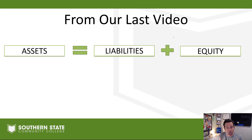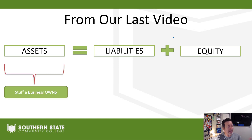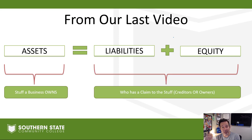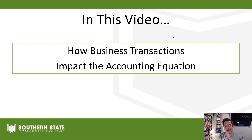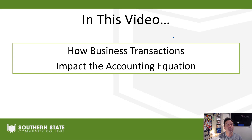To put that into non-accounting terms: assets are simply stuff a business owns, and that is going to be equal to who has a claim to that stuff. That can be two different groups — creditors, who have a claim via a liability, or the owners of the company, which is the equity part. We're going to take a look at how transactions impact that accounting equation, though we don't record transactions directly onto it. We do it through a journal, which we'll cover in the next video.